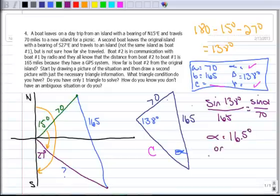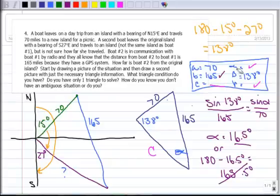Or, I've got to check for the ambiguous case, or 180 minus 16.5 degrees. 180 minus 16.5 degrees is 163.5. So right away, I can tell that this is not valid, because 163 added with this 165 would put me way over 180. So that's not valid. So alpha is going to be 16.5. So let's go ahead and put that in there. 16.5.